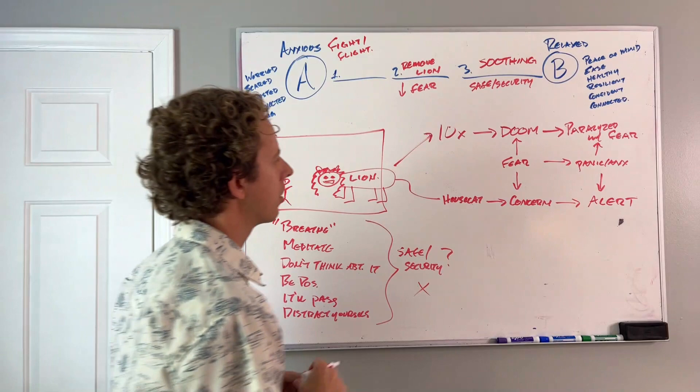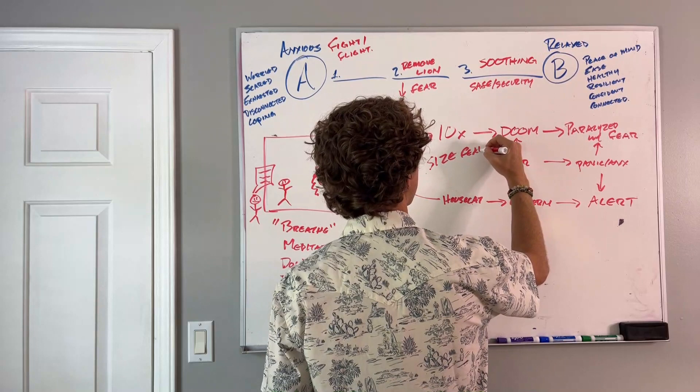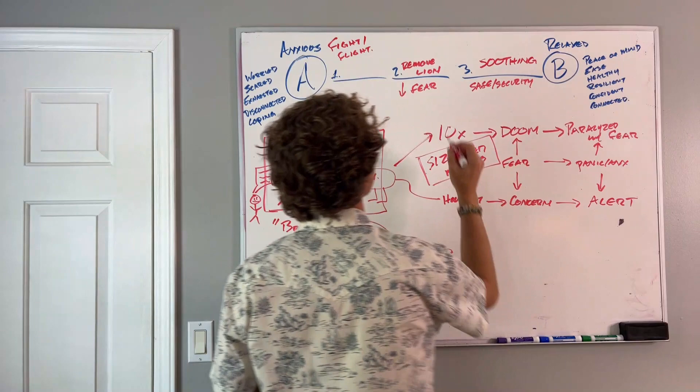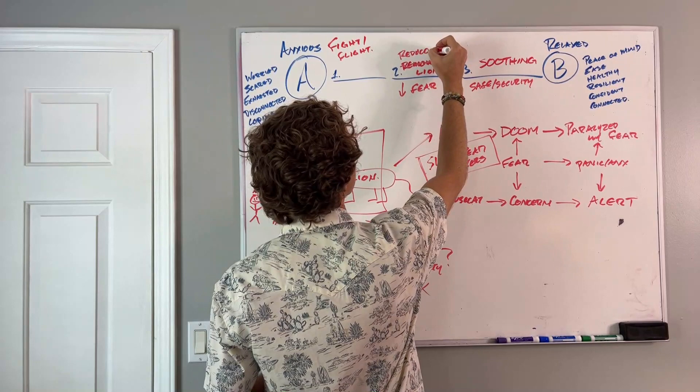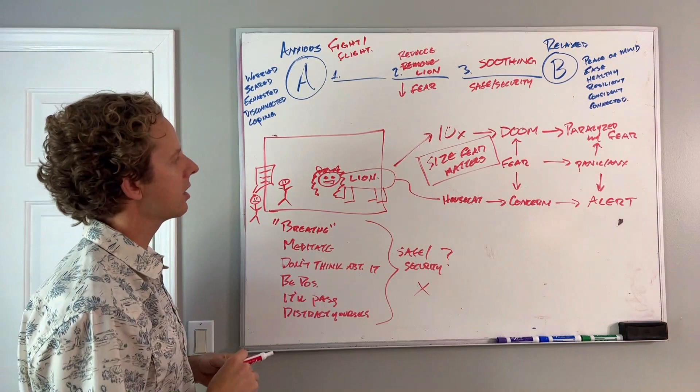What we learn from this is that the size of the fear matters. We don't actually need to remove the lion. We just need to reduce the size of that lion. And if we can reduce the size of this particular fear, you're going to have a different response to it.